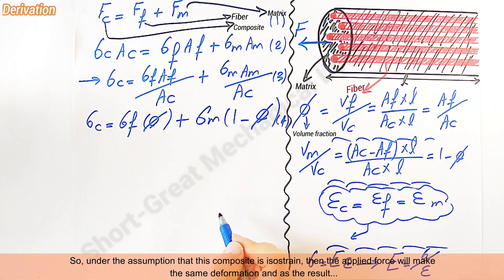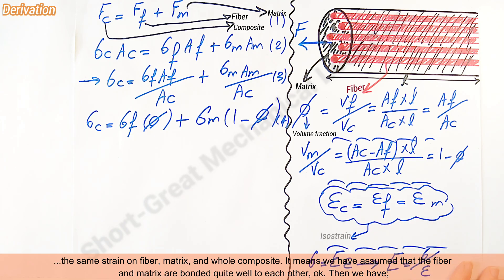Under the assumption that this composite is isostrain, then the applied force will make the same deformation and as a result the same strain on fiber, matrix and whole composite. It means we have assumed that the fiber and matrix are bonded quite well to each other.